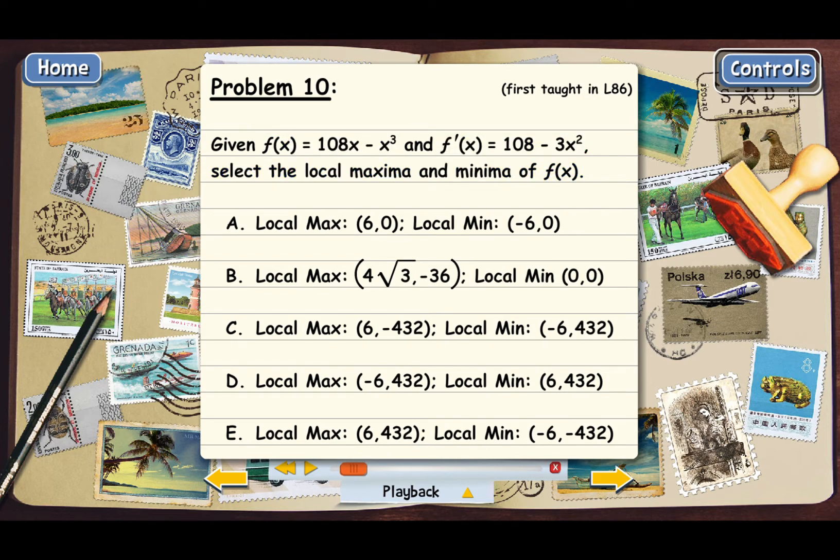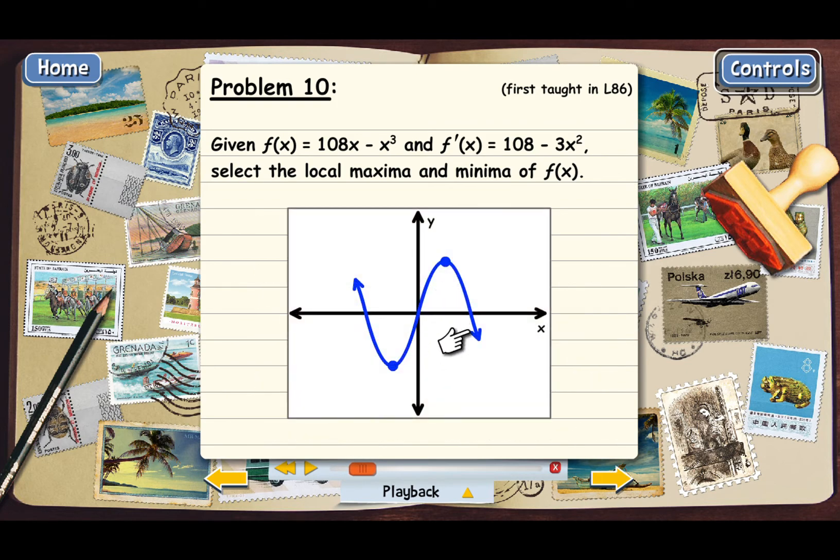Now remember, we can use calculus to zero in on the coordinates of a local max or a local min of even a pretty complicated function. This is a cubic polynomial. Let me just show you a rough sketch of the graph of f(x). Here's the basic curve, and then this is a local maximum and this is a local minimum. Earlier in the course when we studied polynomial functions, we didn't have a good way to find these really important points in a graph.